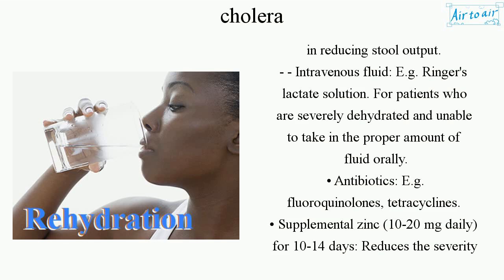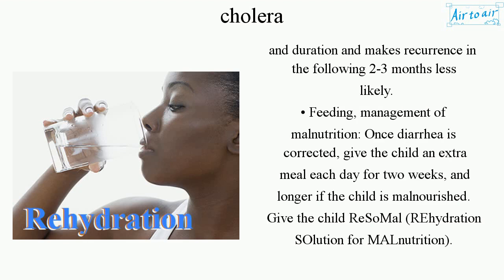Antibiotics such as fluoroquinolones and tetracyclines are used. Supplemental zinc, 10–20 mg daily for 10 to 14 days, reduces the severity and duration of illness and makes recurrence in the following two to three months less likely. For feeding management of malnutrition, once diarrhea is corrected, give the child an extra meal each day for two weeks or longer if the child is malnourished.